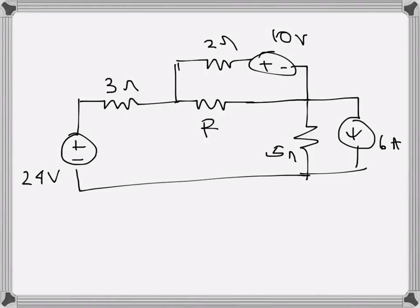For this circuit we need to find the value of R for which maximum power will be transferred to this resistance. We know from the maximum power transfer theorem that for a load resistance, maximum power is transferred when the load resistance equals the line resistance. For this circuit there are a few resistances, two voltage sources, and one current source. We need to find the value of R so that R gets maximum power.